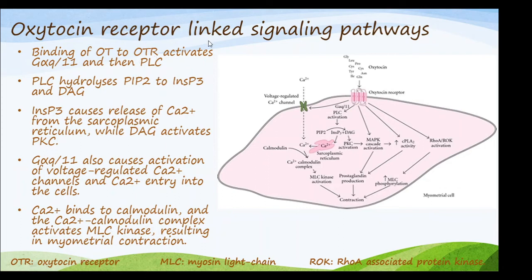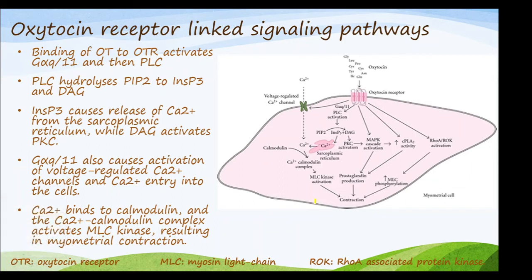The oxytocin receptor is linked to signaling pathways. The oxytocin receptor activates G-alpha-q11, and activation is through the G-protein coupled receptor which activates phospholipase C. Phospholipase C converts phosphatidylinositol diphosphate to inositol triphosphate and diacylglycerol.